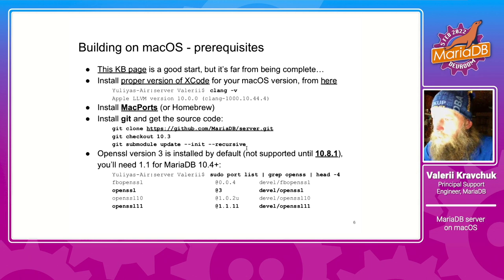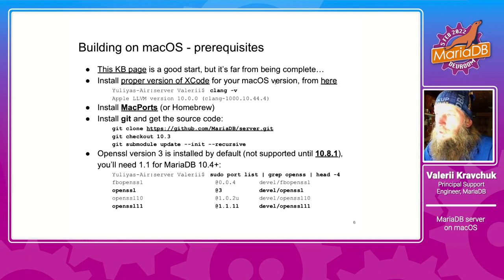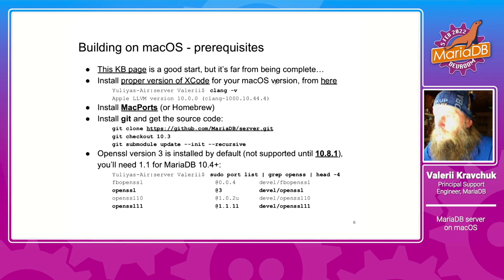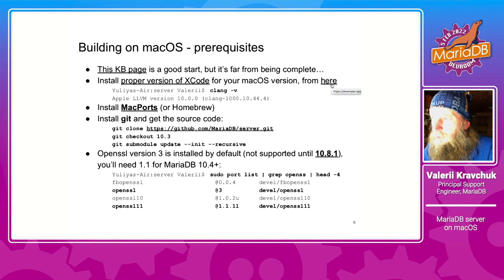Before building MariaDB from GitHub source, one has to install Xcode — the version that matches your macOS version. The first problem for me was that the latest and greatest Xcode installed but does not work on my old macOS. So I had to find out which version to install — it was 9.4, providing Clang 10.0.